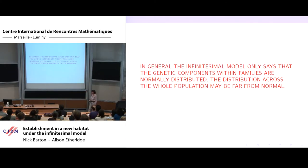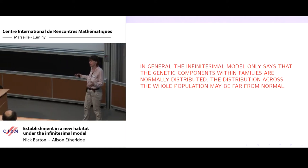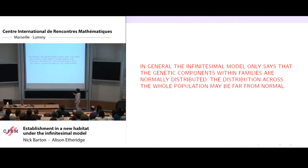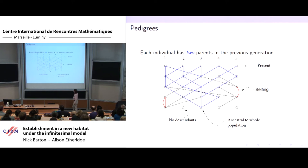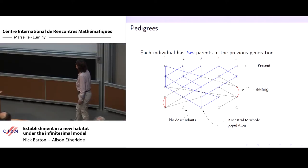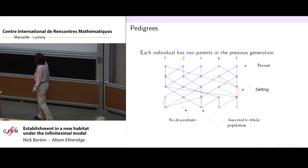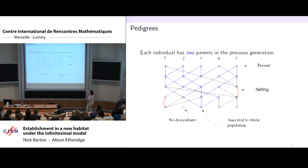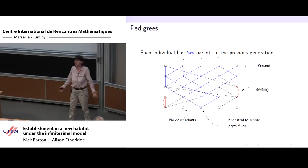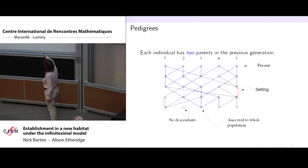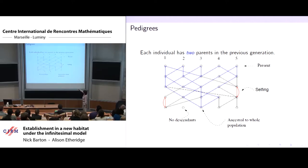The key ingredient in the infinitesimal model is the pedigree. Each individual in our population has two parents. And each of them has picked two parents — not necessarily uniformly at random; there's some model which says how those parents are picked. They might be picked according to trait value — there might be some selection going on. What's important for our purposes is that each individual has two parents, and I'm going to trace back the ancestry of each individual.